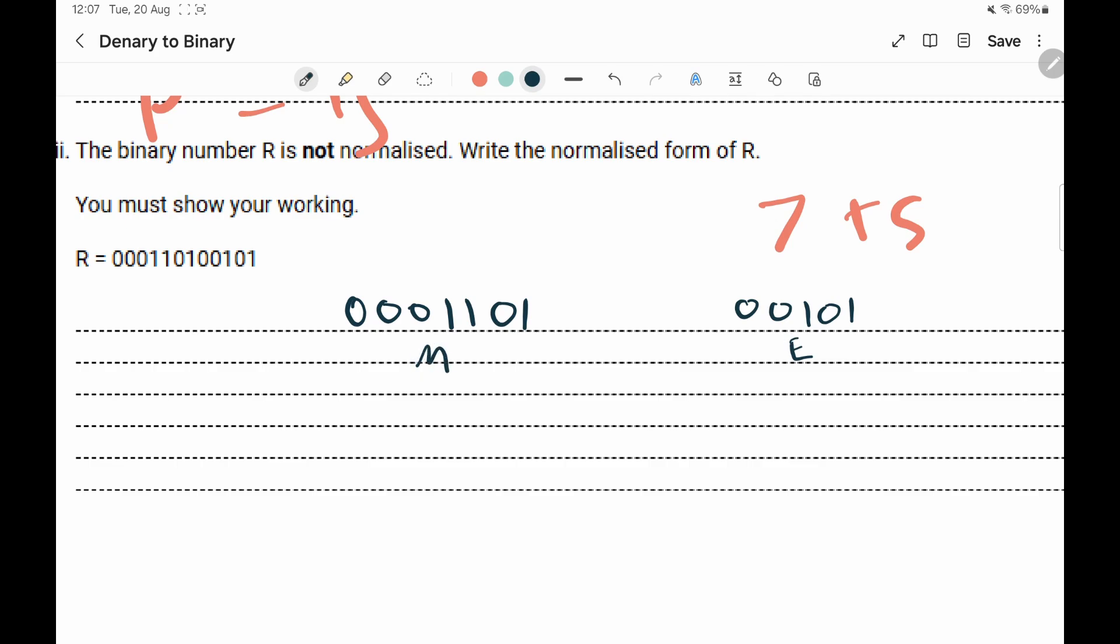So what we need to do is figure out how can we get this number to be essentially two more to the right. Because we don't want these two numbers, but the number needs to remain the same.